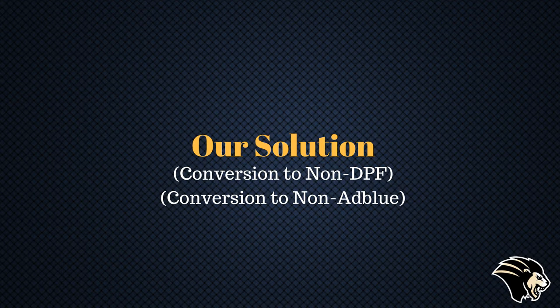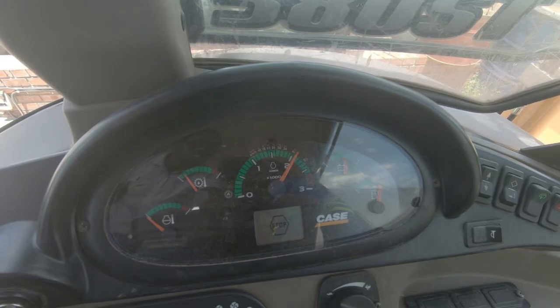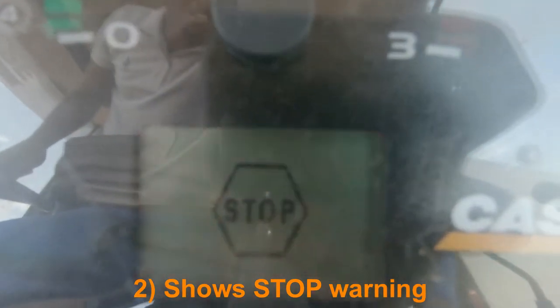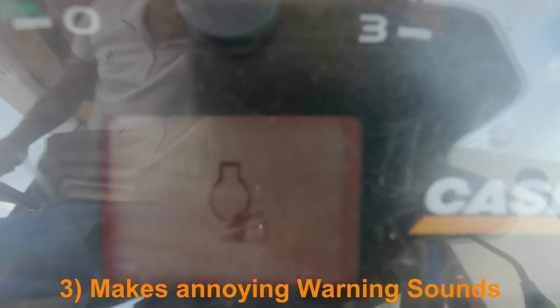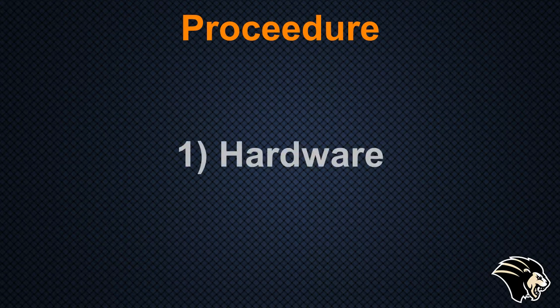What we're simply going to do is convert it to non-DPF and non-AdBlue, like the ones coming from South Africa. After that, you'll see a significant improvement in power. At the moment it won't drive beyond 2,000 RPMs, it's showing a stop sign on the dashboard, and it's making that constant annoying beeping sound. We're going to do two things: deal with the hardware first, then the computer.